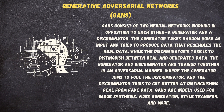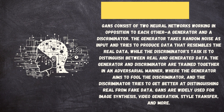GANs consist of two neural networks working in opposition to each other: a generator and a discriminator. The generator takes random noise as input and tries to produce data that resembles the real data, while the discriminator's task is to distinguish between real and generated data. The generator and discriminator are trained together in an adversarial manner, where the generator aims to fool the discriminator and the discriminator tries to get better at distinguishing real from fake data. GANs are widely used for image synthesis, video generation, style transfer, and more.